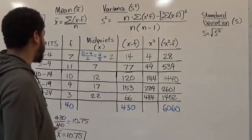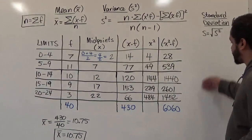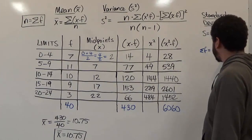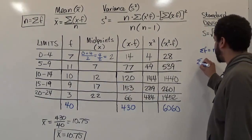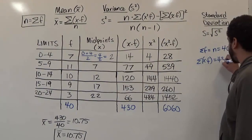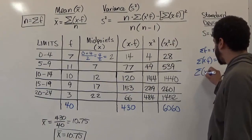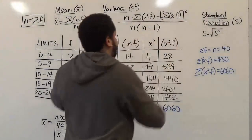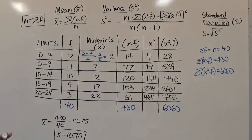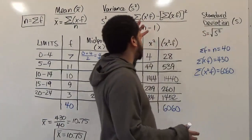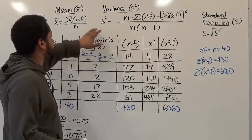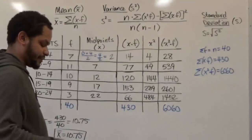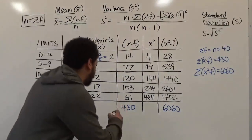A quick reference: our sum of f, which is n, is forty. Our sum of x times f is four hundred and thirty. And our sum of x² times f is six thousand and sixty. Now we're going to calculate the variance, which is the largest equation we have here, since the standard deviation is just the square root of it. This is one of the only two formulas you'll be using.